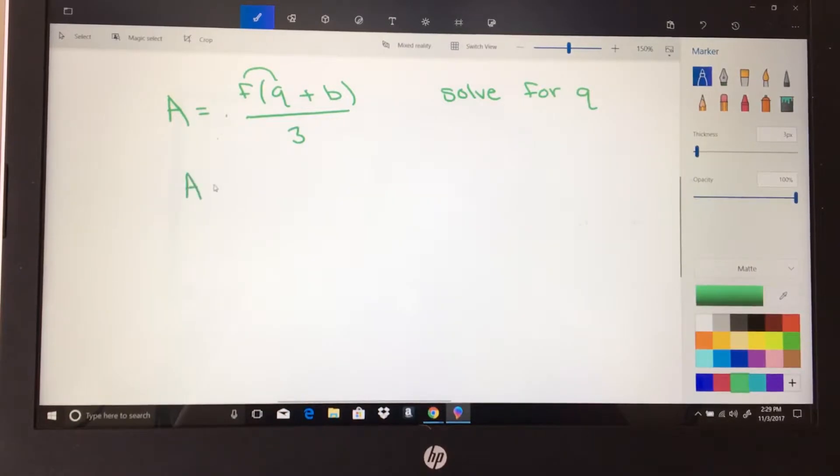So we're going to say okay, this is going to be A equals fq plus fb over 3. And now we're going to use opposite operations to isolate this q. So we're going to multiply both sides here by 3 to get rid of that fraction. These threes will cancel out and I'll have 3A equals fq plus fb.